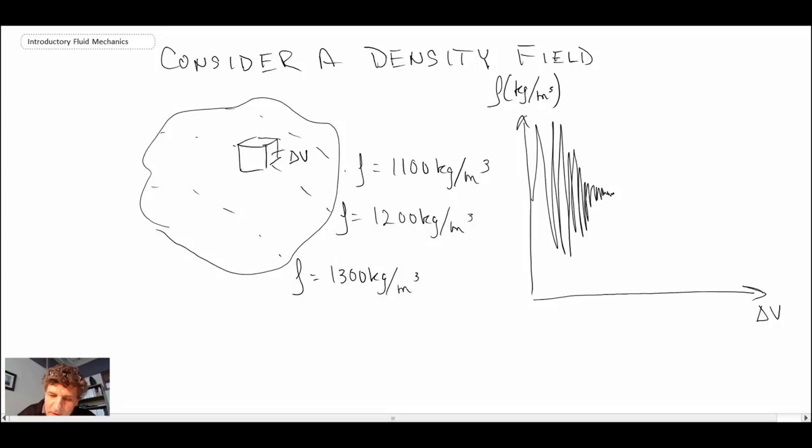But then what we'll find is as the delta V gets larger and larger, you get to a point where you get to what would be a convergence. And then you have convergence in the density. And then eventually, as delta V gets larger and larger, and let's say it's a kilometer, two kilometers, three kilometers, four, we start getting macroscopic effects.